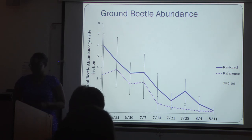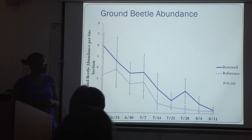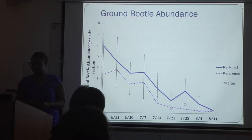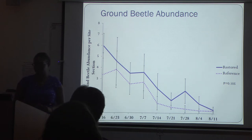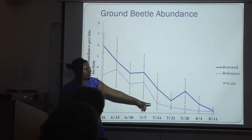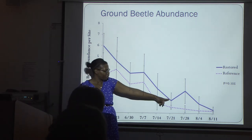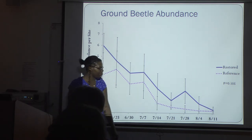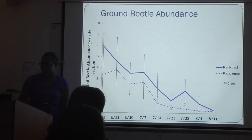There was also a large decline starting from the beginning of the season all the way down to August. All three restoration sites also had a large increase in relative beetle abundance between July 21st and July 28th.